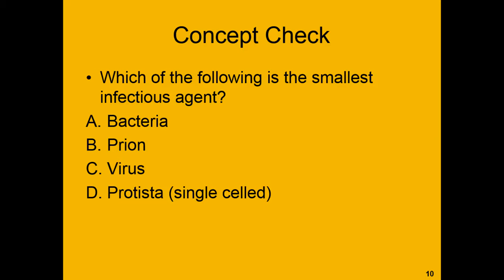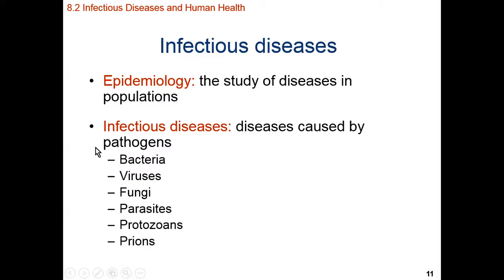Hopefully you got prion. Prions are the smallest infectious agents. On this list, protista are the largest — they are eukaryotic infectious agents. Then bacteria are the second largest. Viruses are the second smallest. And then prions are the smallest infectious agent.